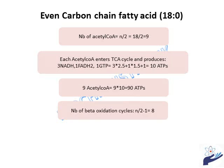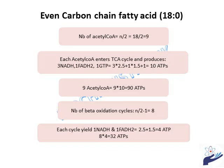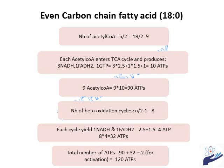The number of beta-oxidation cycles = N/2 − 1 = 8 cycles. Each cycle yields 1 NADH and 1 FADH2, equal to 4 ATP. So 8 cycles × 4 = 32 ATP. Total ATPs = 90 + 32 − 2 (for the activation cost) = 120 ATP. Note: if the fatty acid is given in activated form (as acyl-CoA), do not subtract the 2 ATP.